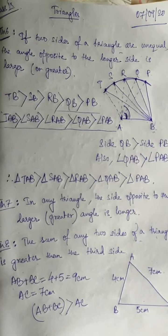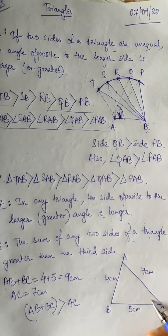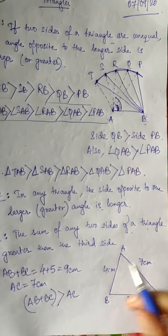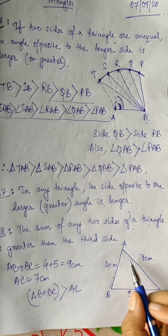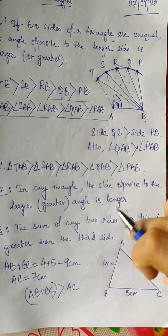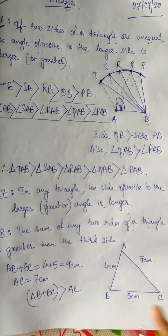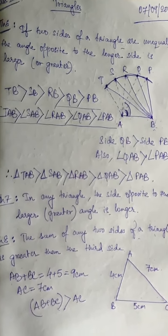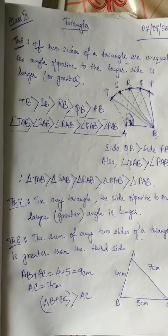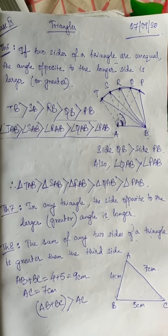If the sum is not greater, then this will not form a triangle. For example, if I take 2 cm and 5 cm, then 2 plus 5 is 7, and we can still join with the 7 cm side. But if I have 1 cm on one side and 7 cm on another, then the 7 cm will not join properly and the shape cannot form a triangle. So these are the theorems from this chapter. Go through all the theorems — next day we will do exercise 7.4. Thank you, students.